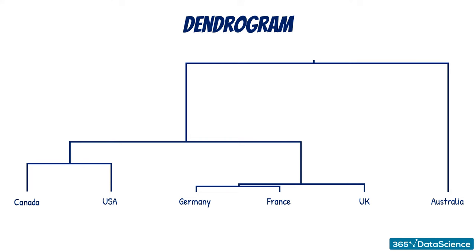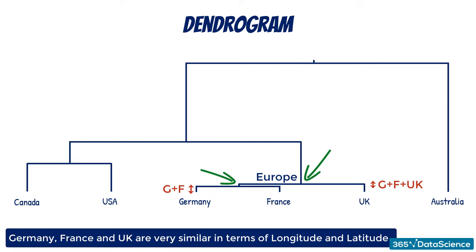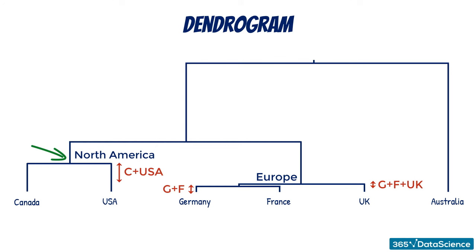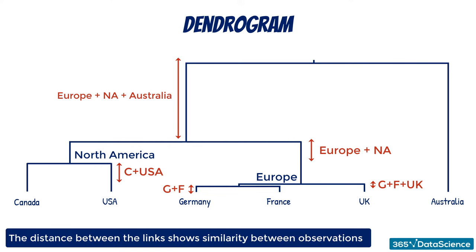What other information can we get from the dendrogram? Well, the bigger the distance between two links, the bigger the difference in terms of the chosen features. Germany, France, and the UK merged into one cluster very quickly, showing they are very similar in terms of longitude and latitude. Moreover, Germany and France are closer than Germany and UK, or France and UK. The USA and Canada came together not long after. However, it took half of the dendrogram to join these five countries together, indicating the Europe cluster and the North America cluster are not so alike. Finally, the distance needed for Australia to join the other five countries was the other half of the dendrogram, meaning it is extremely different from them. To sum up, the distance between the links shows dissimilarity between features.